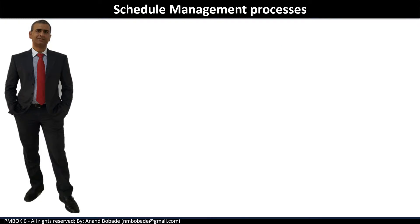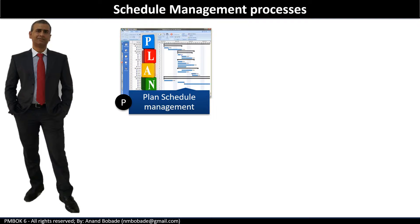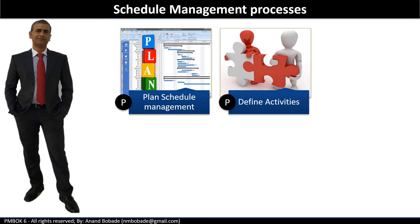Before getting into the process details, let's take a look at the list of all six processes. Plan schedule management is under the planning process group — it is the process of establishing policies, procedures, and documentation for the project schedule. Define activities, again under the planning process group, is the process of identifying and documenting specific actions to be performed to produce the project deliverables.